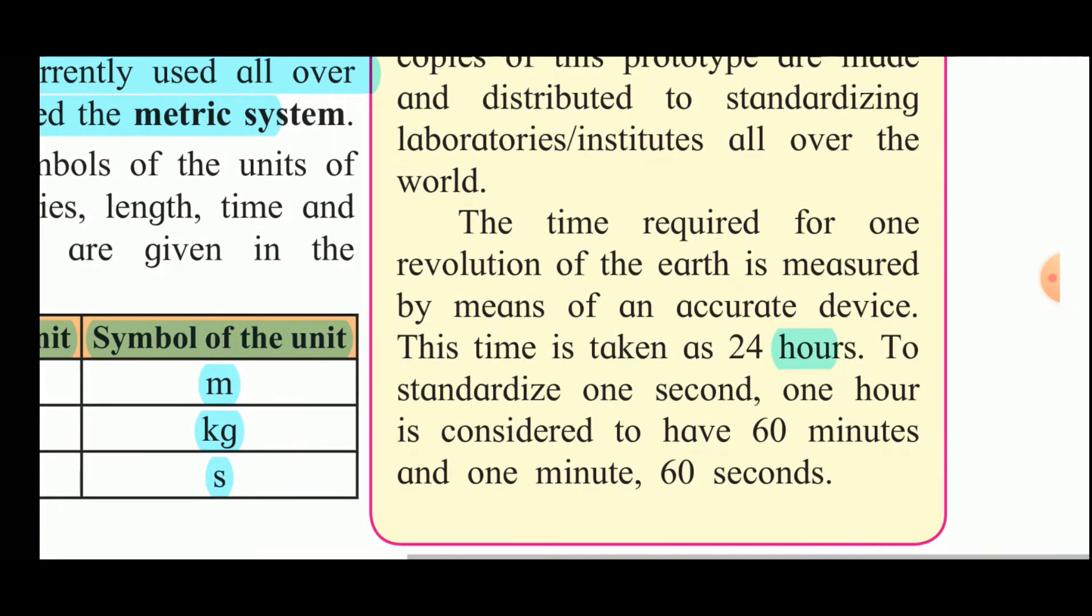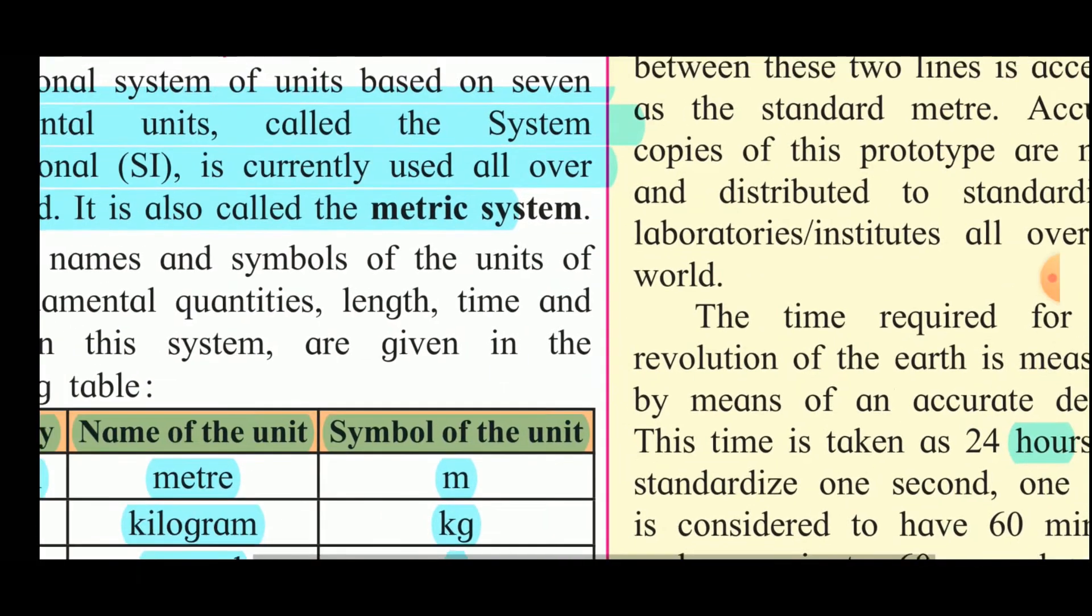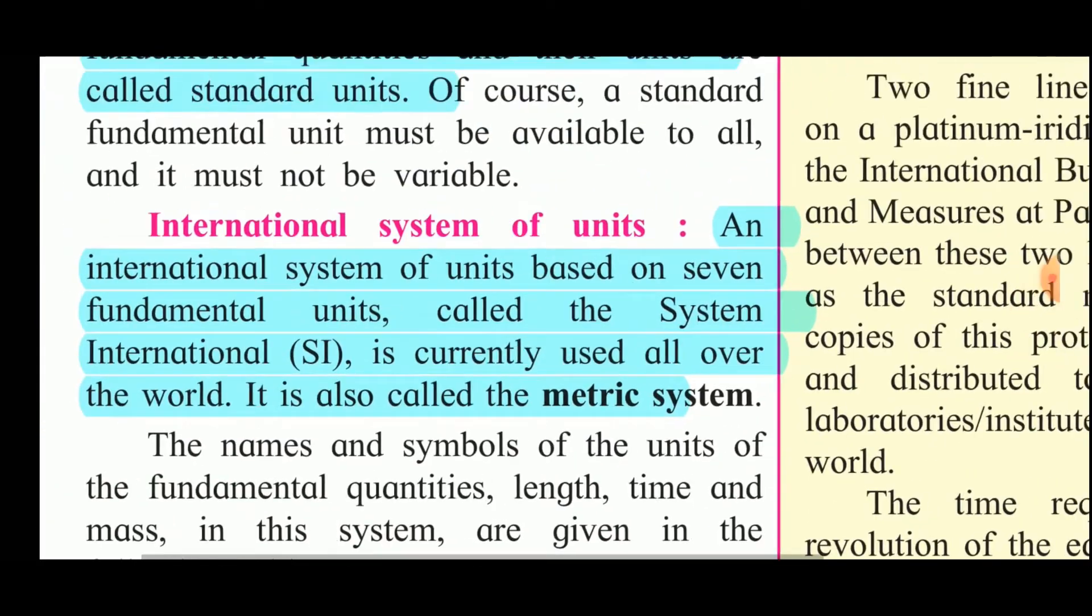The time required for one revolution of the earth is measured by means of an accurate device. This time is taken as 24 hours. To standardize 1 second, 1 hour is considered to have 60 minutes and 1 minute the 60 seconds and this is how 1 second is being calculated.